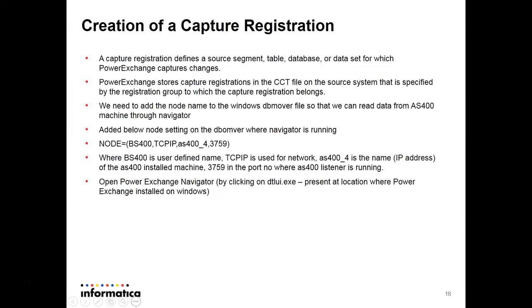Our Navigator will be running on a Windows machine and our PowerExchange is installed on the AS400 machine. To create a capture registration and register tables, you go to the Navigator. We need a connection string between the Windows Navigator and the AS400 machine. To connect them, we copy the node statement where AS400 is running and add it to the Windows Navigator DBMOVER file, so that the Windows Navigator can connect to the AS400 listener running on port 3759.